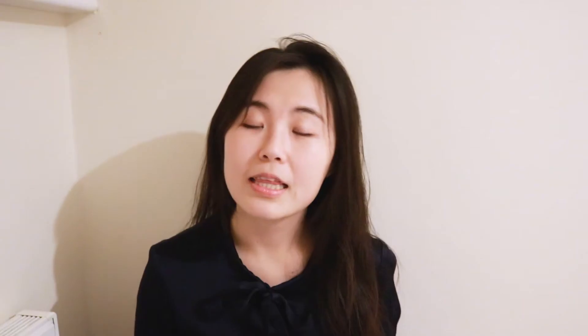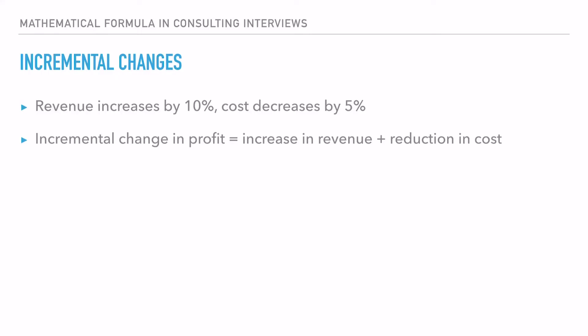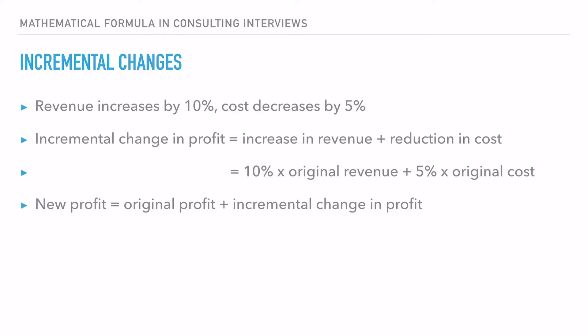Instead of recalculating the new revenue and new cost and plugging them back into the revenue minus cost equation, you can calculate the incremental increase in revenue — which is 10% times the original revenue — plus the reduction in cost, which is 5% times the original cost. This gives you the incremental increase in profit. Add that to the original profit to get the new profit, saving yourself a couple of minutes.